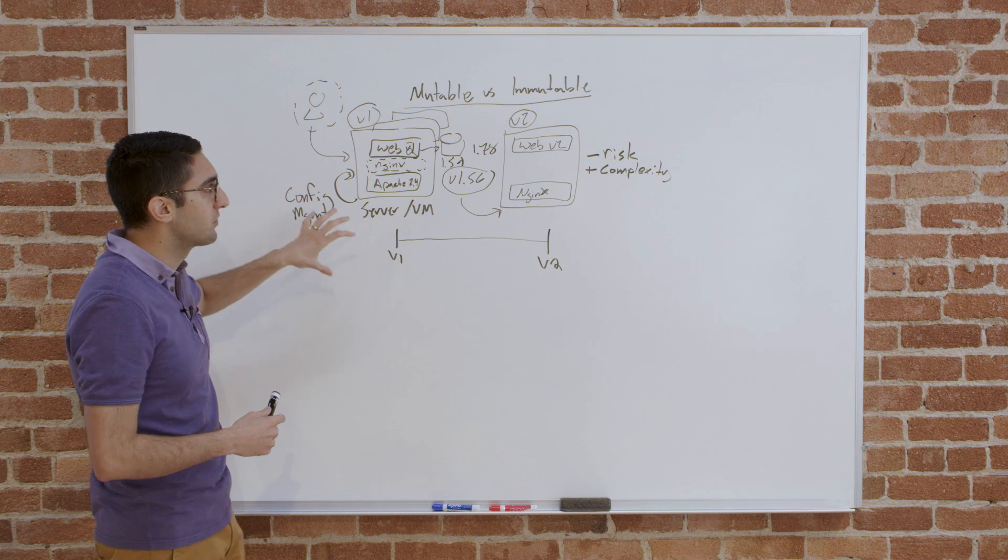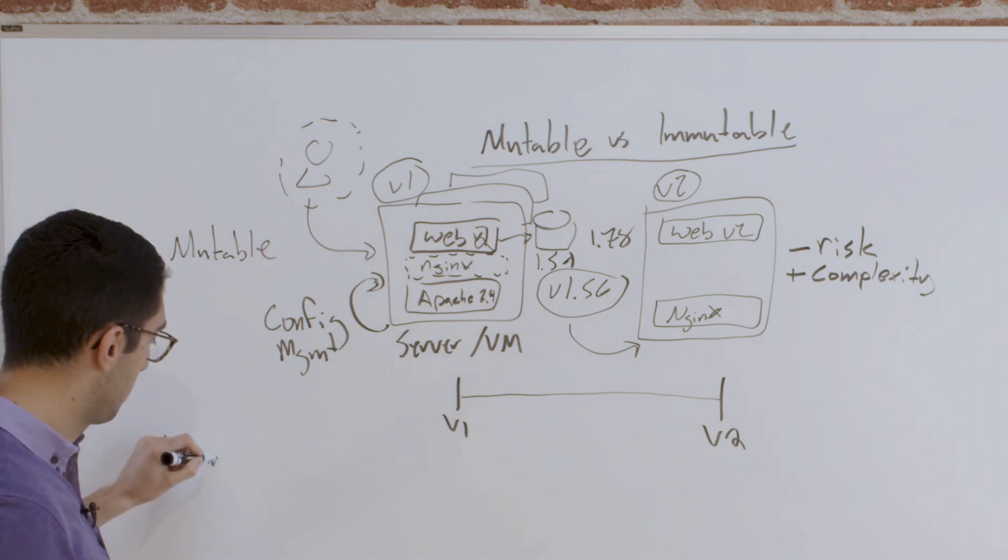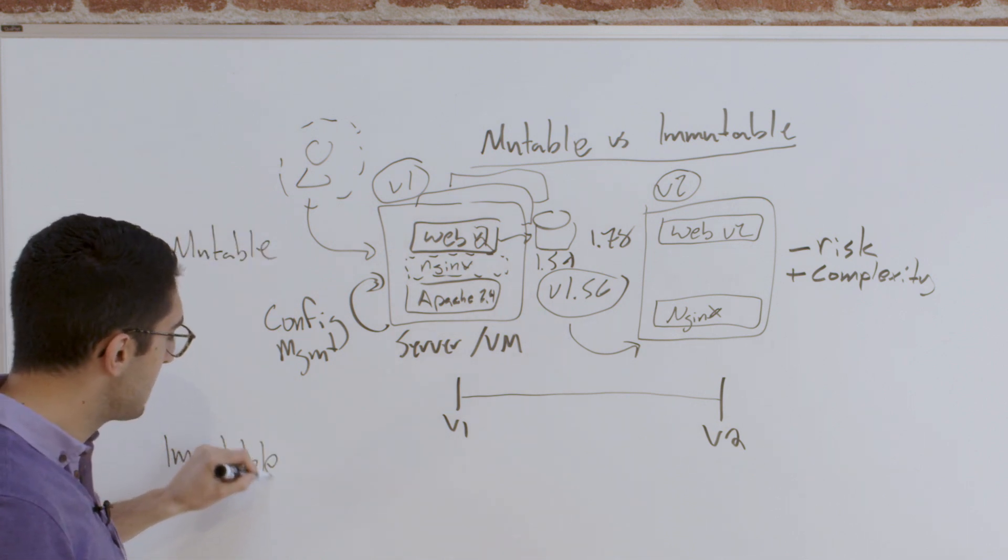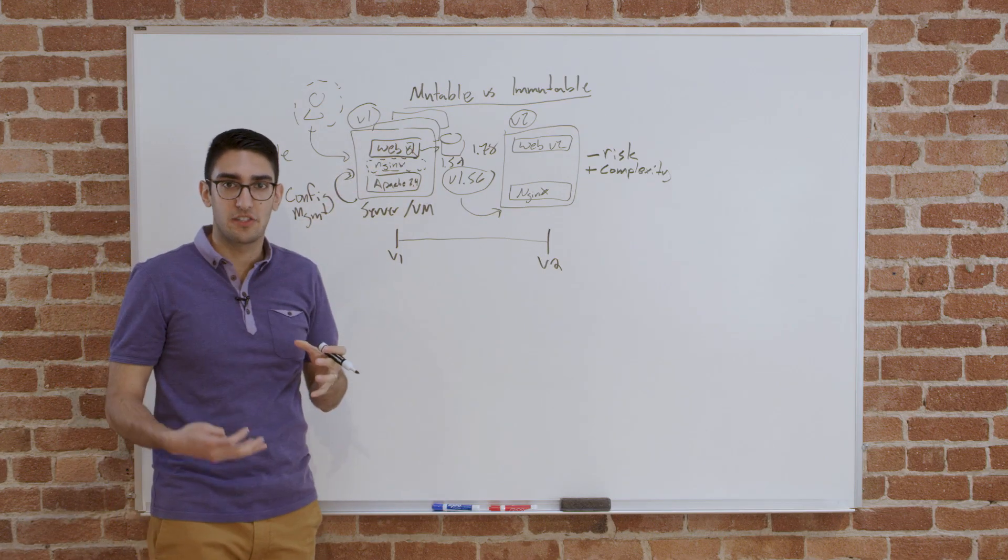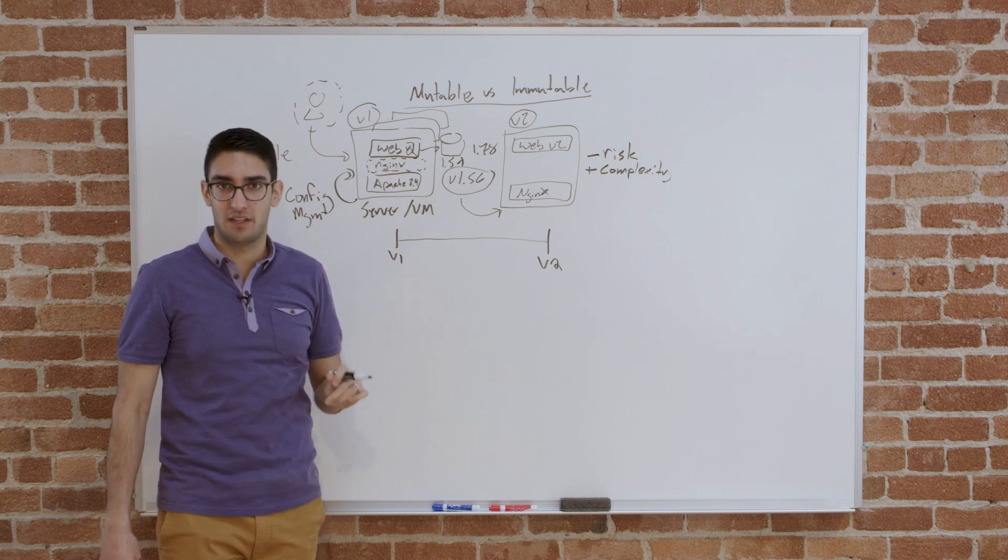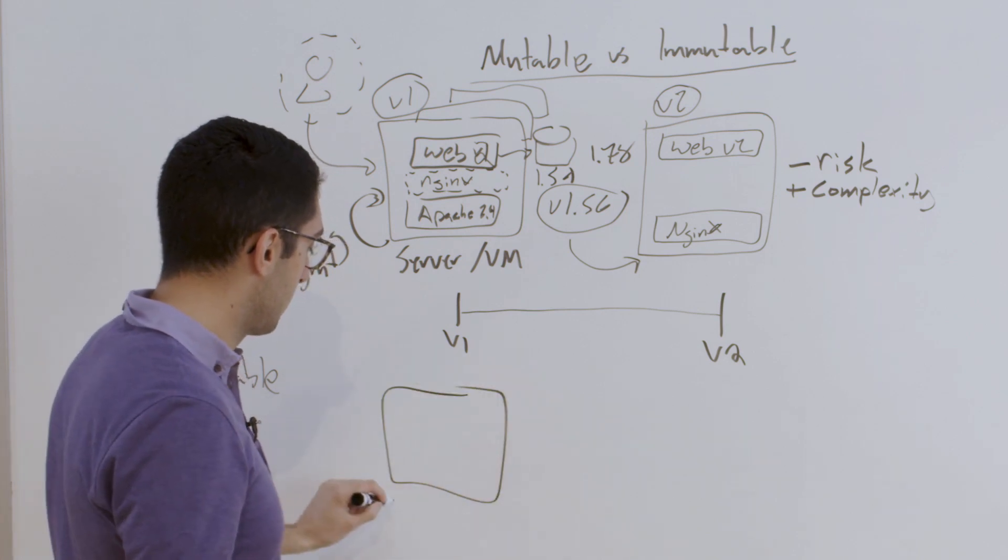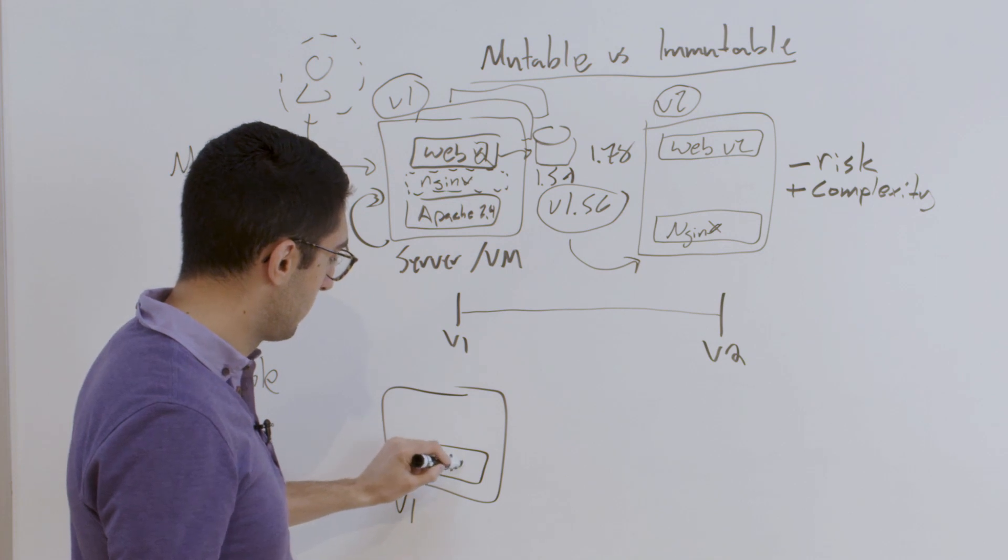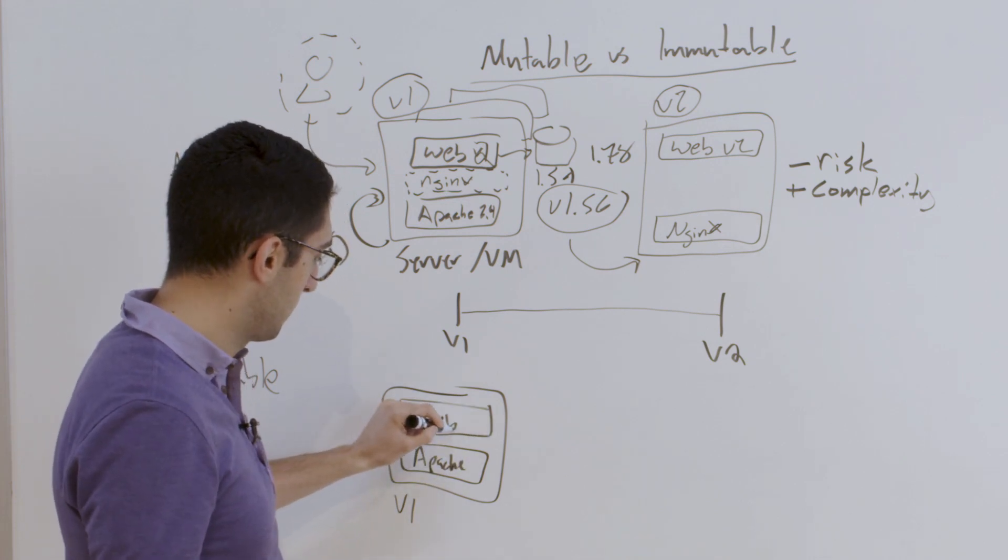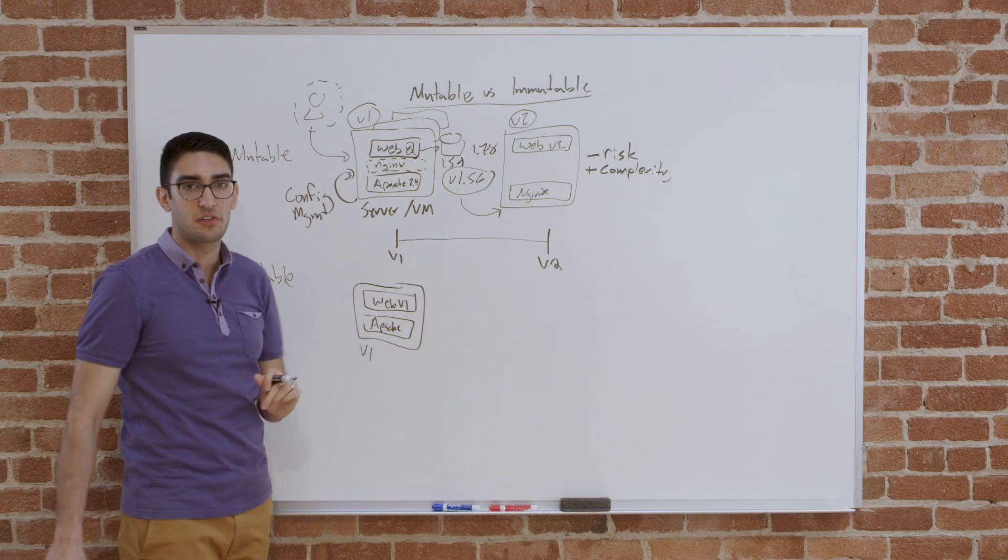So that brings us to the alternate way of thinking about this, which is, if this is mutable, then how do we think in terms of an immutable world? And so the difference is when we go immutable, we don't want to ever upgrade in place. Once the server exists, we never try to upgrade it to v2. So what we'll do is create our server, call it version 1 again, we'll install Apache, we'll install our web server. And we'll take a snapshot of this image. And we'll call this version 1 of our server.